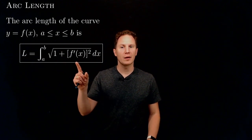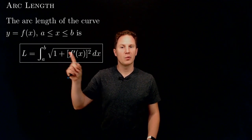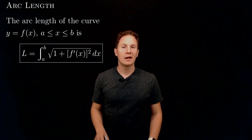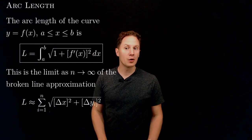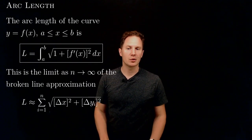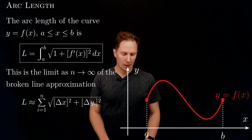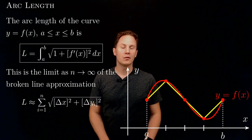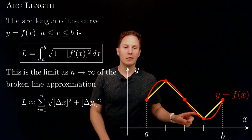Here we are squaring the derivative of f, adding 1 to that square, taking the square root, and then integrating from a to b. The way to obtain this integral formula is by taking the limit of the broken line approximation to the length — obtained by taking the graph of the function and subdividing the interval [a, b] into smaller subintervals.